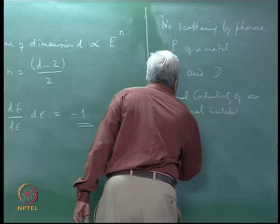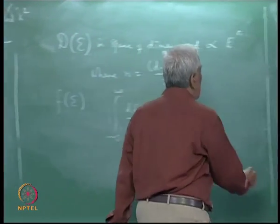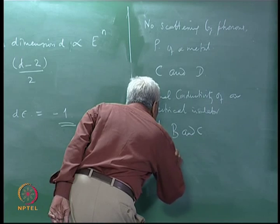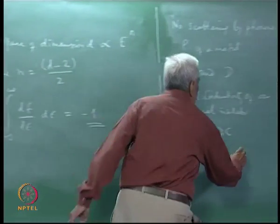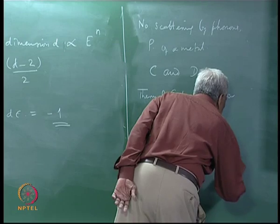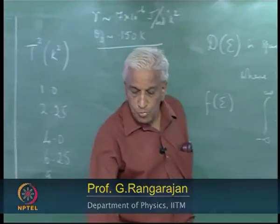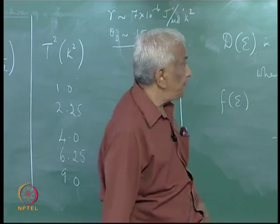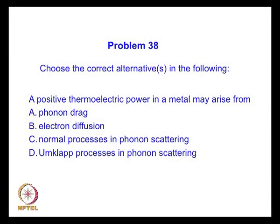The next question is about a positive thermal power. Usually, in a metal, we know the thermal power has a negative sign. So the only way this can become positive is because of Umklapp processes, which can reverse the phonon wave vector. Obviously, the phonon wave vector alternative is correct, and that means alternative A about phonon drag is also correct. So the correct alternatives are A and B.